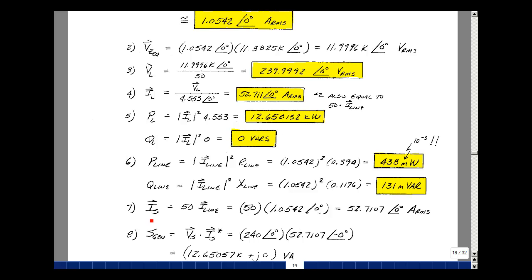The current that's coming out of the generator is going to be 50 times the line current. Remember, we're stepping the current down. So we step it back up to go back to the generator. And that's going to be 52.7107 amps RMS. So very much like what we had previously, so that we had the transformer in between, we're able to step the voltage up, step the current down.